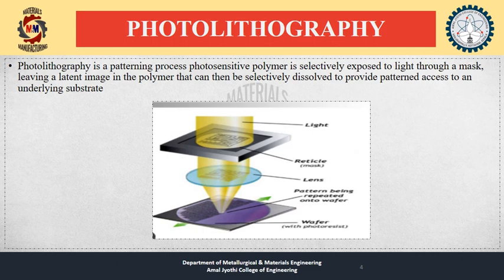Typically, ultraviolet light is used to transfer a geometric design from an optical mask to a light-sensitive chemical called photoresist. The photoresist either breaks down or hardens where it is exposed to light. The patch in the film is then created by removing the softer parts of the coating with appropriate solvent. Conventional photoresist typically consists of three components: resin, sensitizers, and solvent.